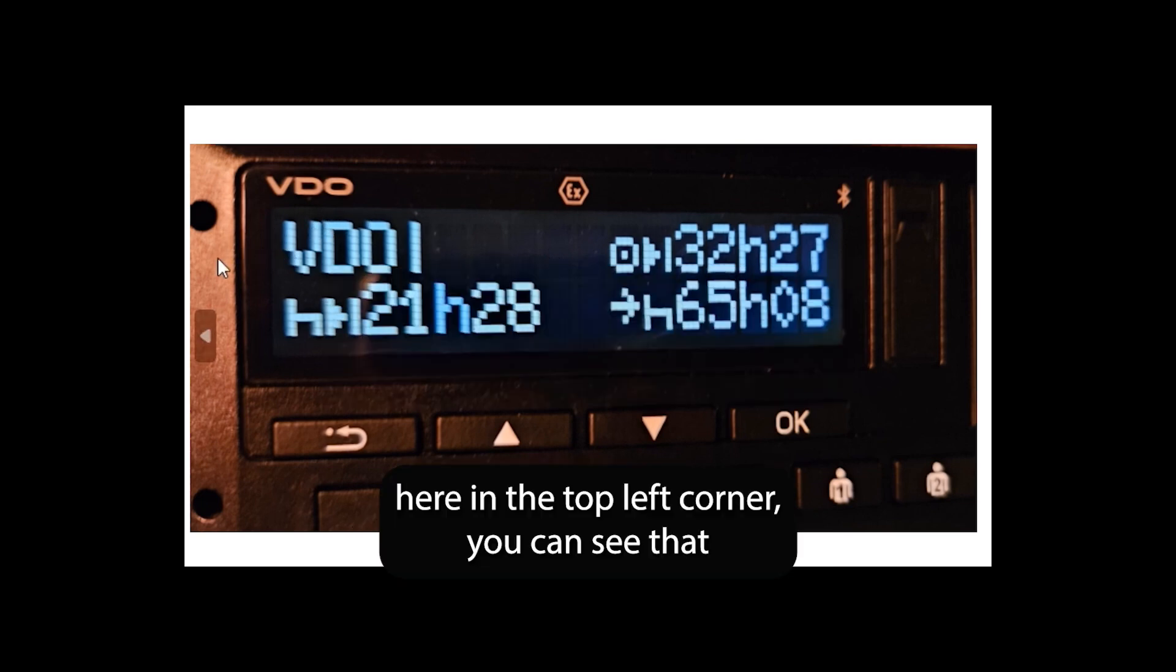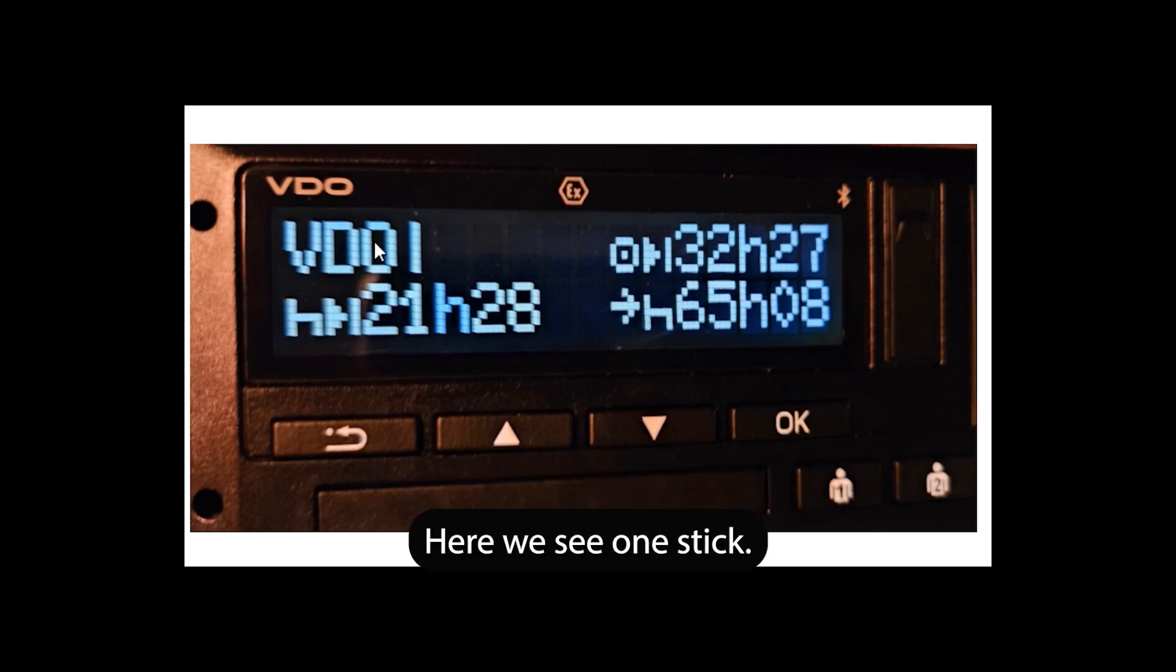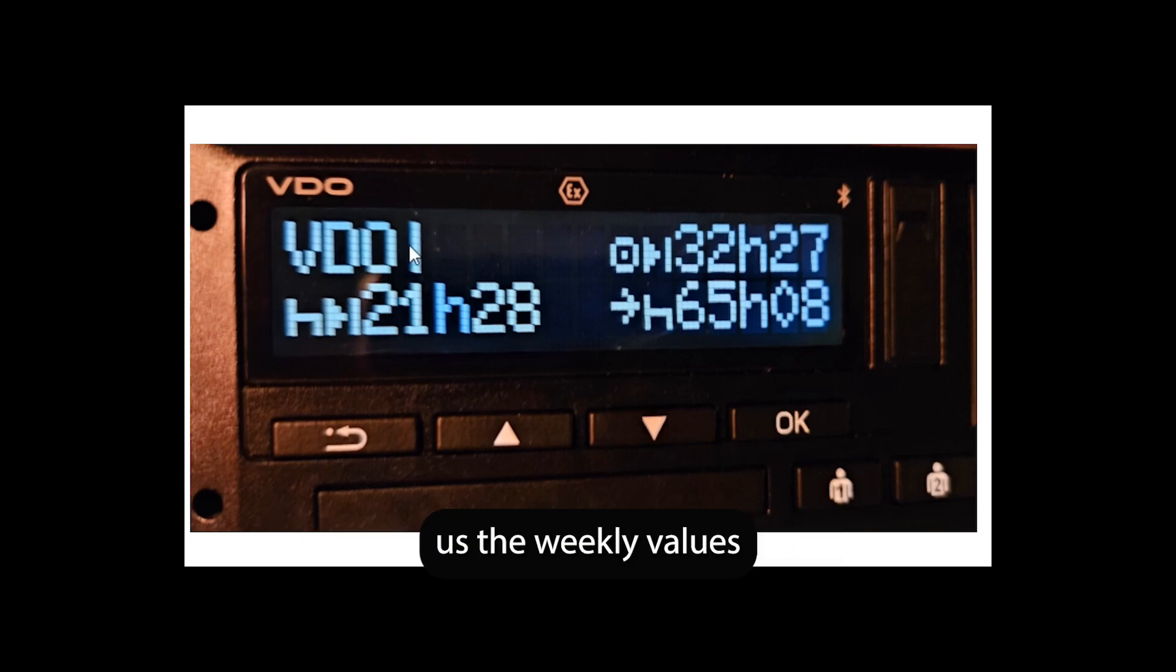Here in the top left corner you can see that the VDO display can apply to multiple periods. Here we see one stick, so this means that the Tachograph shows us the weekly values.